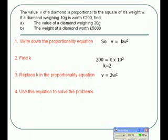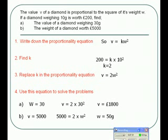Replacing K in our equation gives V equals 2W². For part A, W is 30, so V equals 2 times 30 squared, which is £1,800. For part B, the diamond is worth £5,000, so we substitute: 5000 equals 2 times W squared. Rearranging: W squared equals 5000 divided by 2, which is 2500. The opposite of squaring is square rooting, so W equals 50 grams.